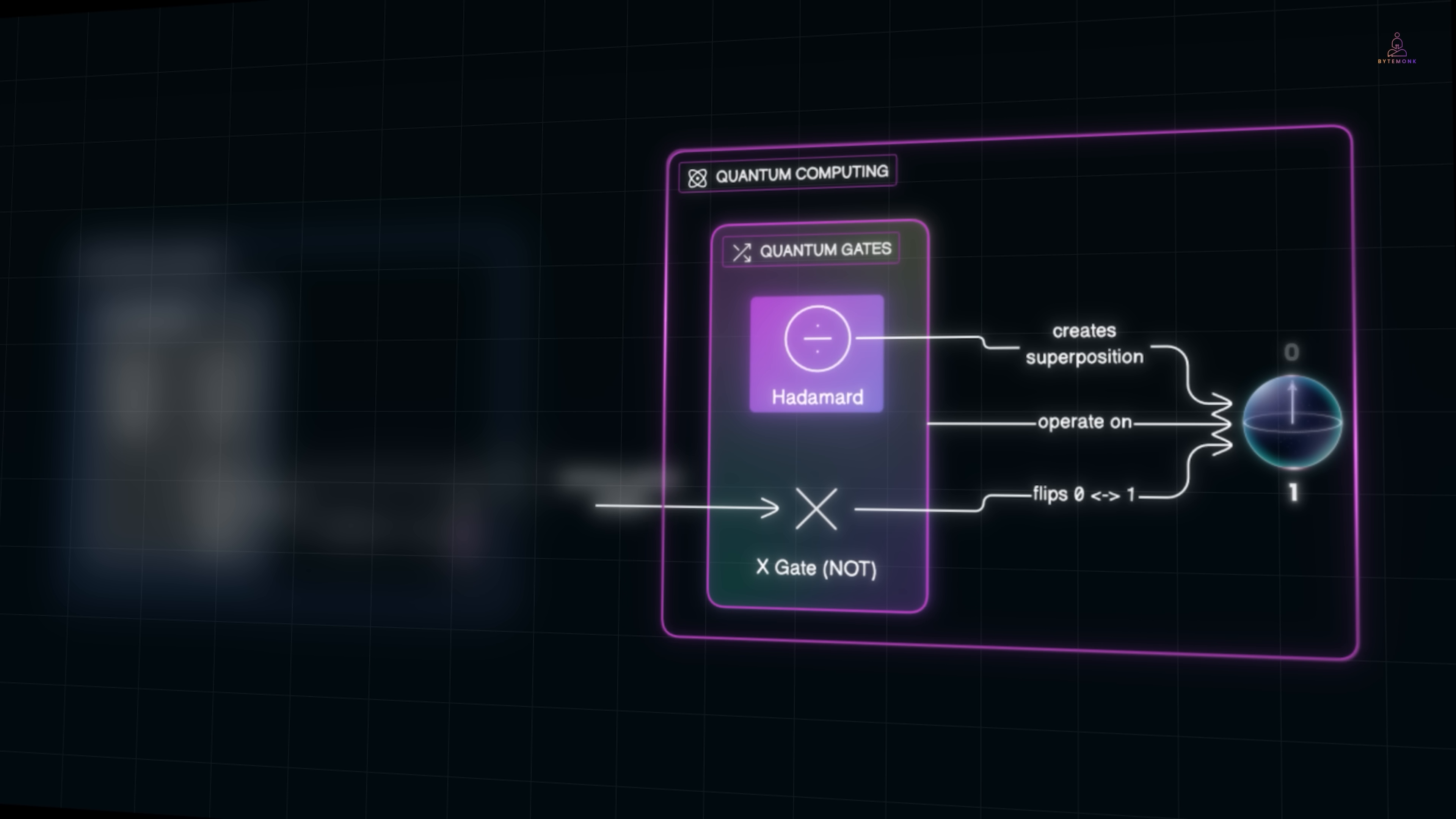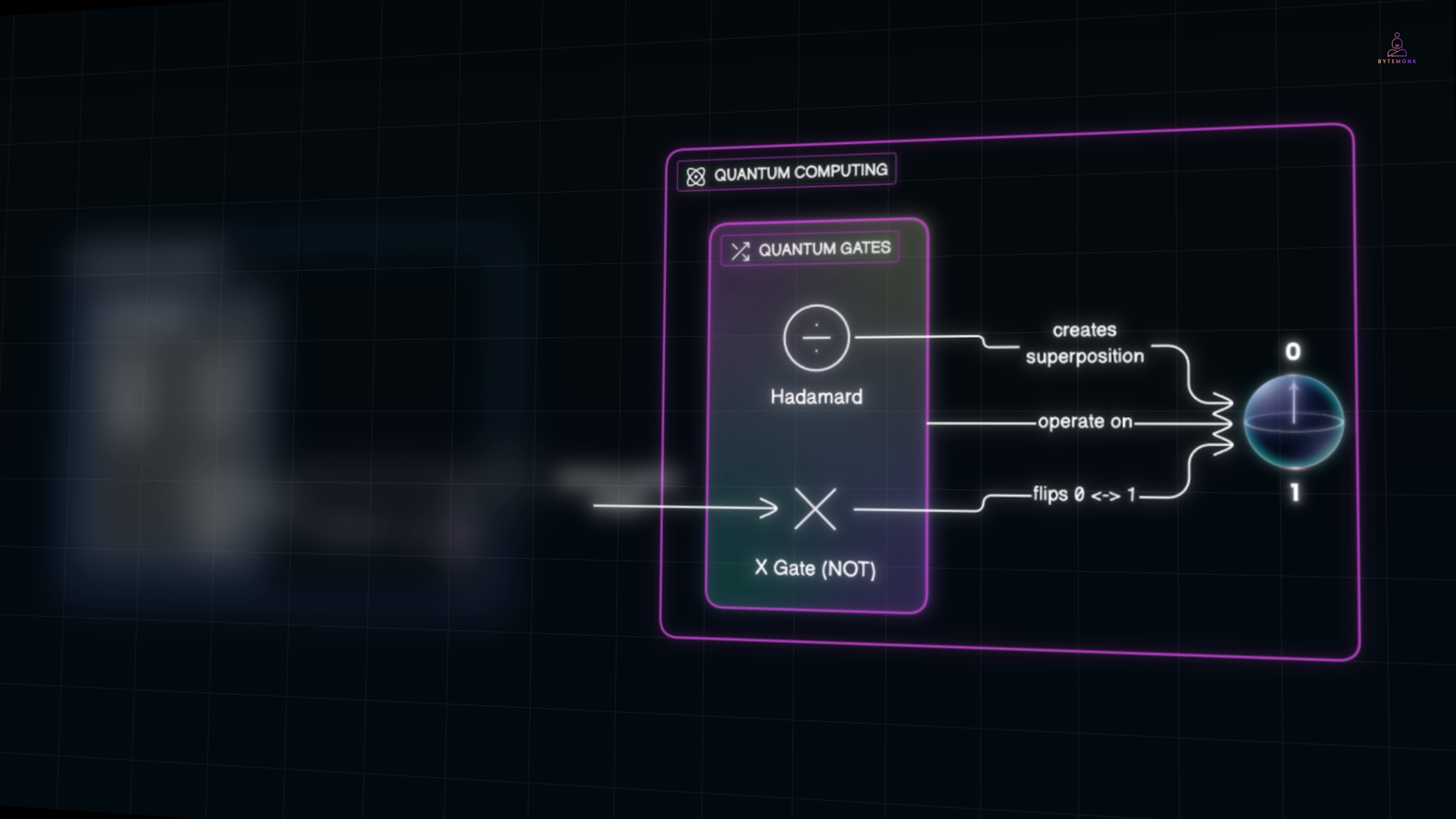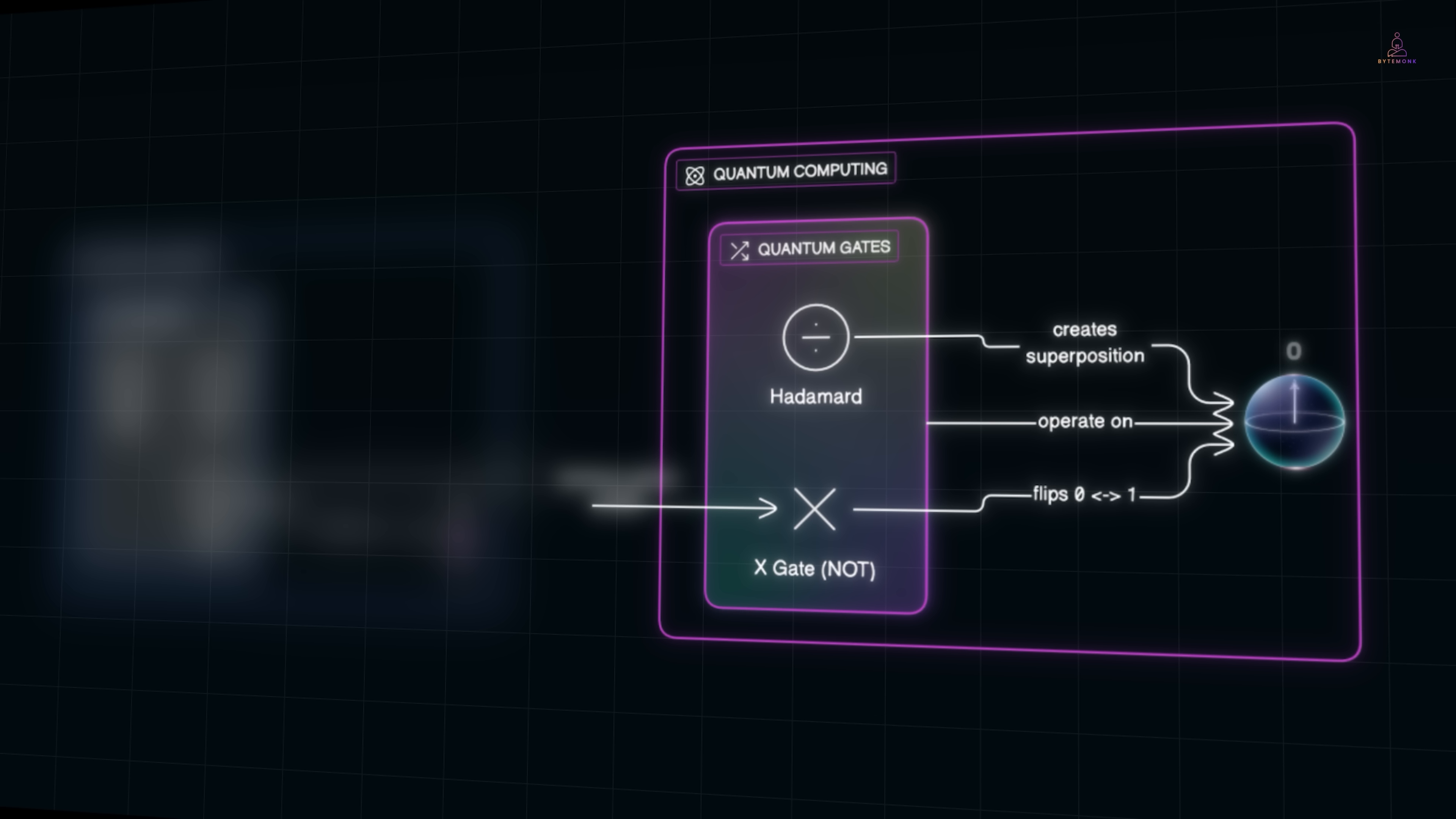Then there's the Hadamard gate, which isn't a simple flip, it's a mixer. If the qubit is definitely 0, Hadamard transforms it into an equal mix of 0 and 1. If a qubit starts locked in 0 at the north pole, the Hadamard gives it a perfect twist so that it now sits on the equator, half 0, half 1. In everyday language, it's like taking a coin that was flat on the table showing heads and giving it a perfect spin in the air so it's equally likely to land heads or tails. That's the magic. By stacking many of these gates, we choreograph how qubits spin and tilt, and that's how quantum circuits are built. They're like dance routines for probabilities, steering the qubits toward the answer we want.